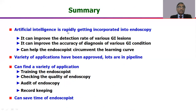In summary, artificial intelligence is rapidly being incorporated into endoscopy. It can improve detection rates of various GI lesions and improve accuracy of diagnosis of various GI conditions. It helps endoscopists circumvent the learning curve. Lots have been achieved and lots are in the pipeline. It has found a variety of innovative applications in training endoscopists, checking endoscopy quality, audit of endoscopy, record keeping, and it can save the endoscopist's time.